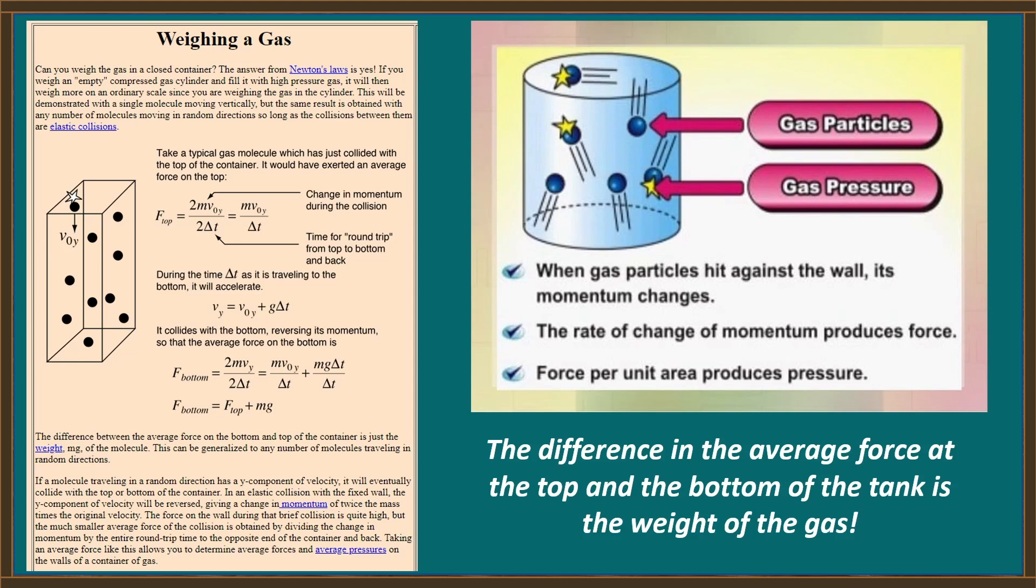But now, in the reverse direction, on its way down, it's going to be subject to the acceleration of gravity. And when it collides with the bottom of the tank, again reversing its momentum, the average force on the bottom is the same as the force on the top plus its mass times the acceleration of gravity. And it's that difference in average force at the top and the bottom of the tank that accounts for the weight of the gas.